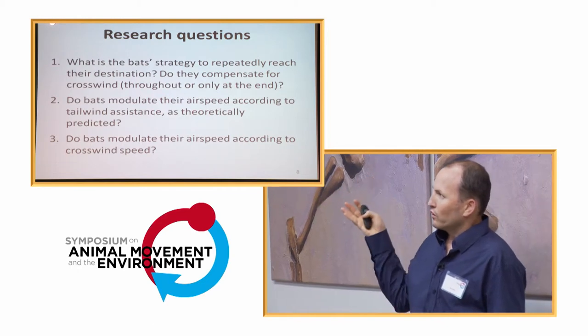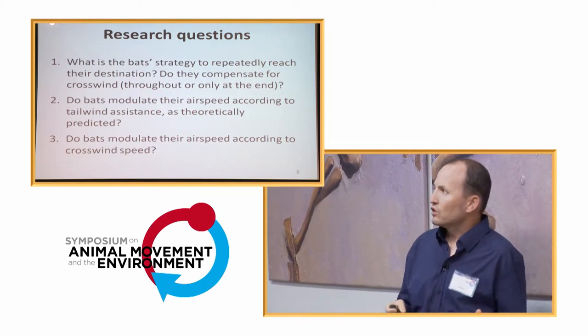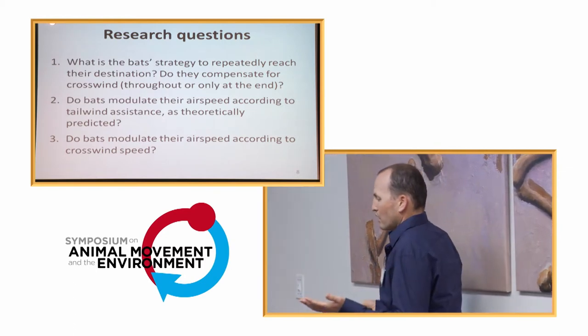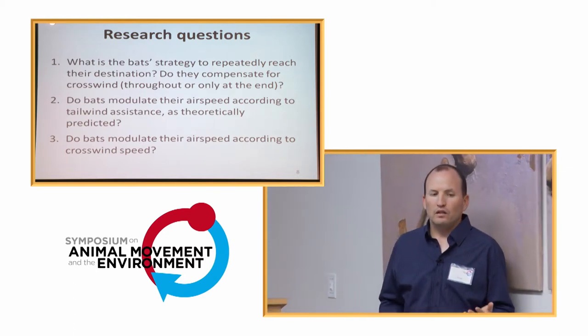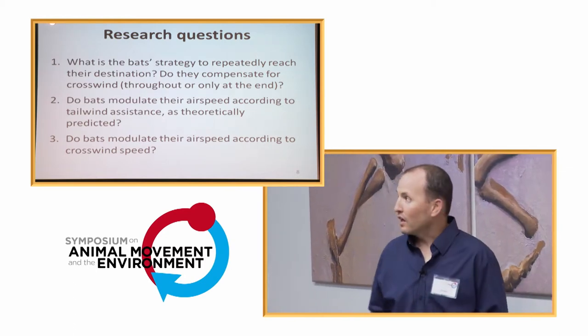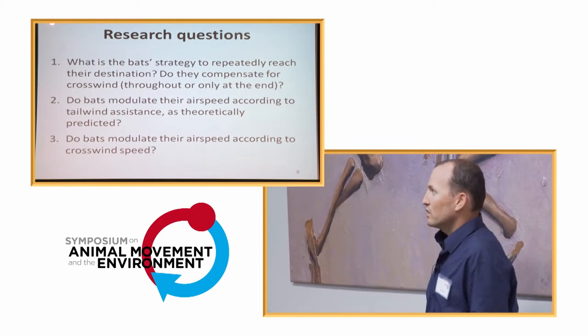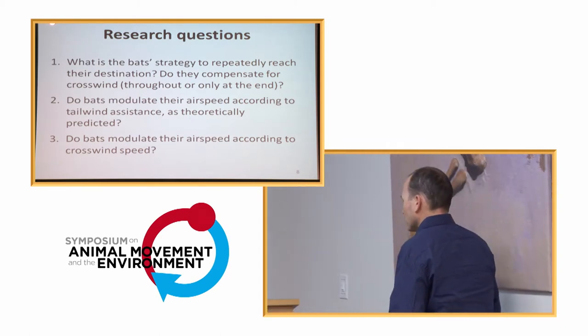So, the first one is crosswind compensation. The second one is changes in airspeed in relation to tailwind assistance. And the third one is the modulation of the airspeed according to crosswind speed.